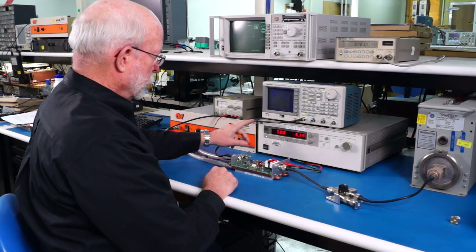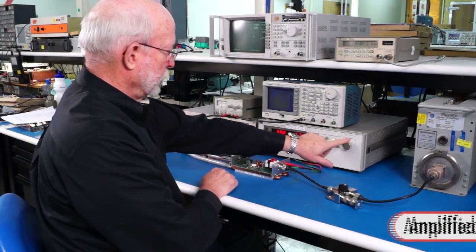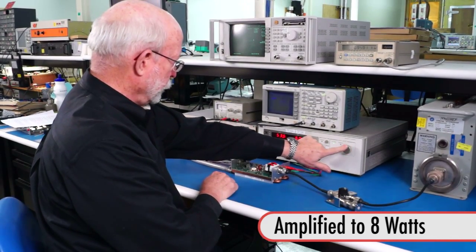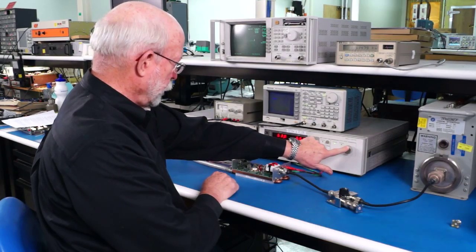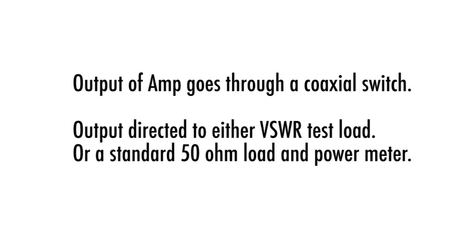This signal is amplified by a laboratory amplifier to about 8 watts, the required drive level to the amplifier being tested. The output of the amplifier goes through a coaxial switch where the output can be directed to either the VSWR test load or to a standard 50 ohm load and power meter.